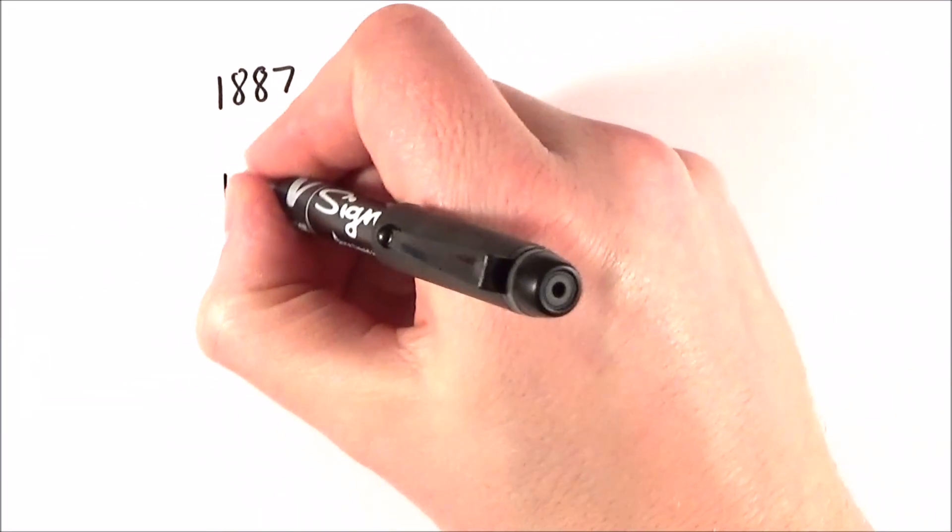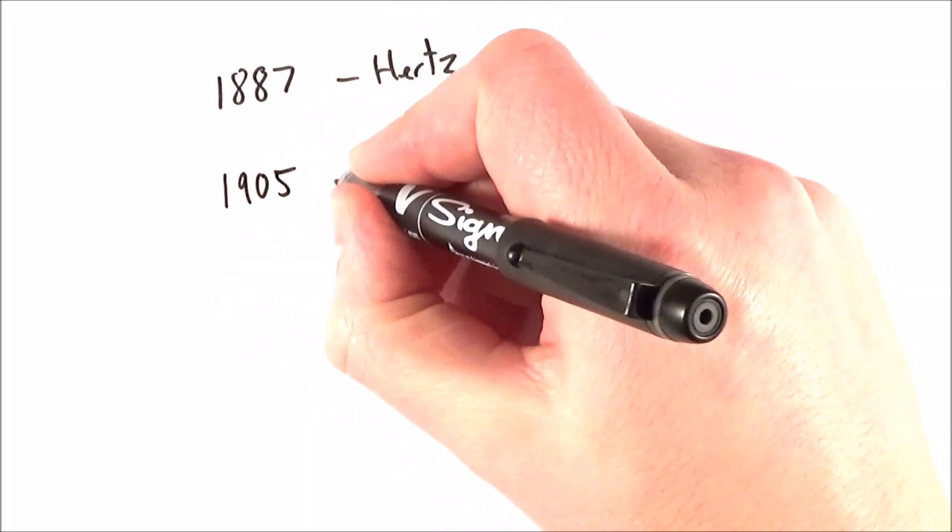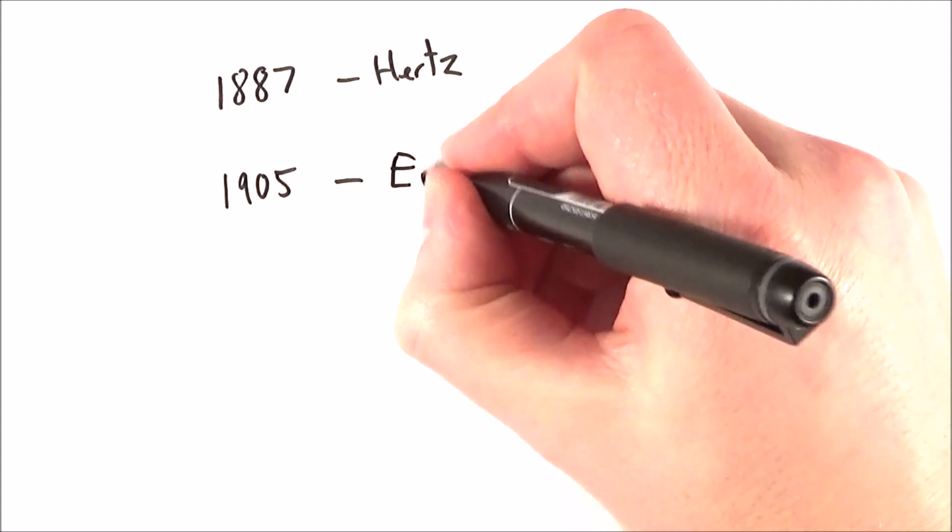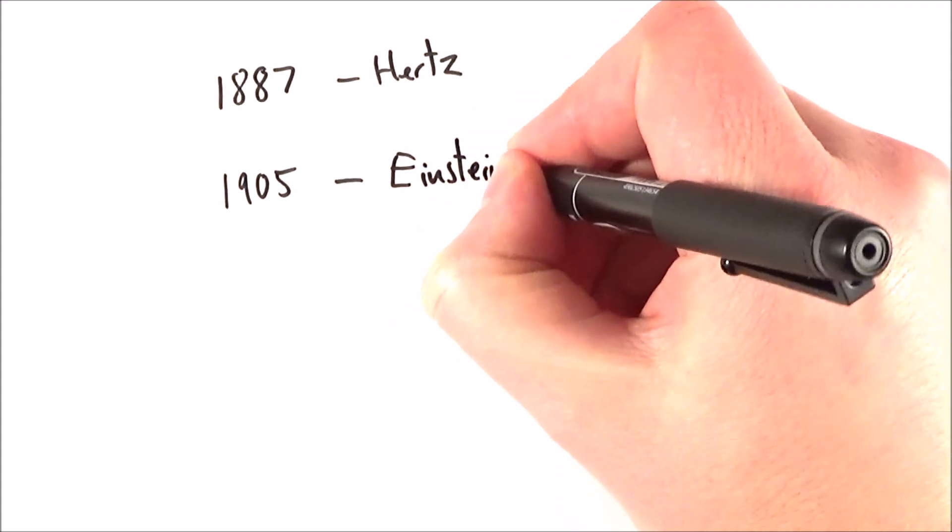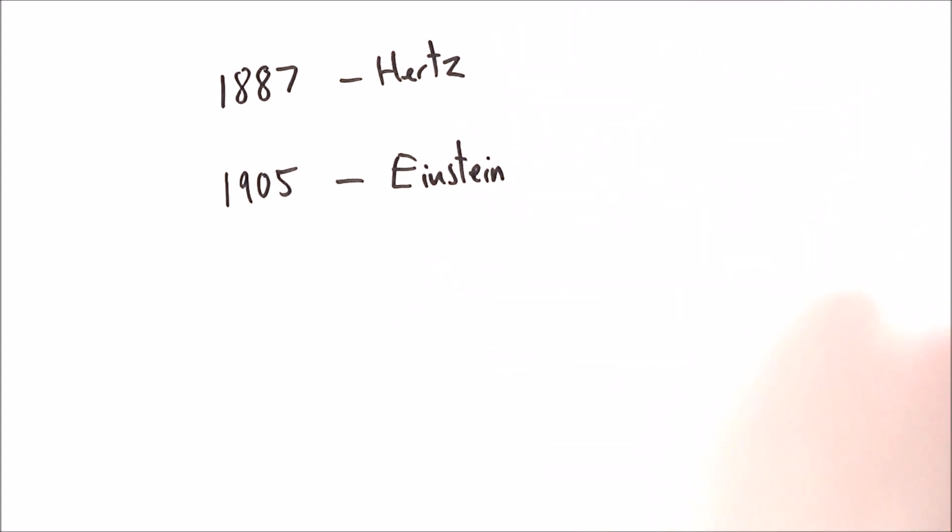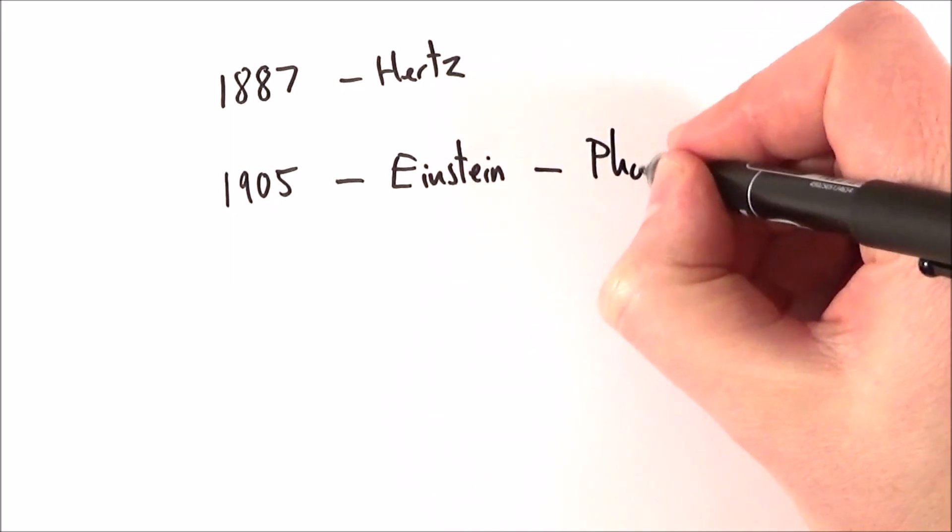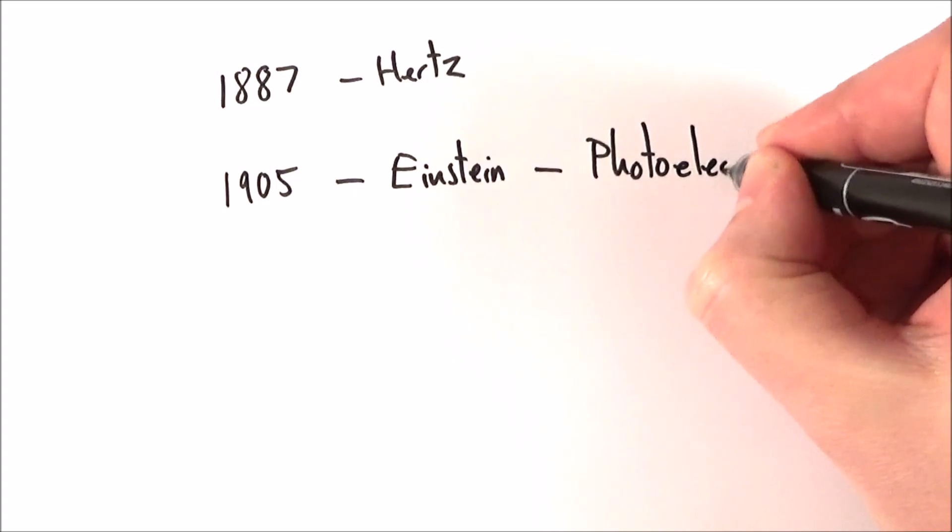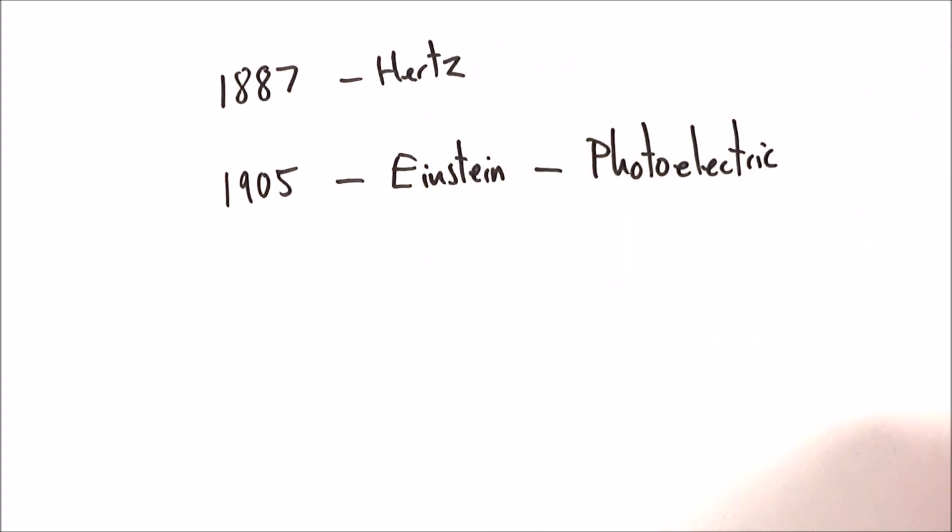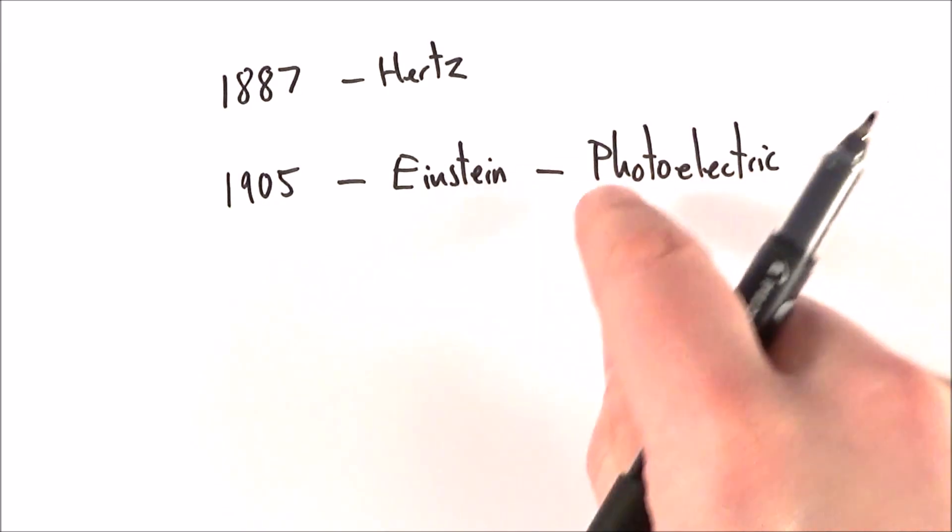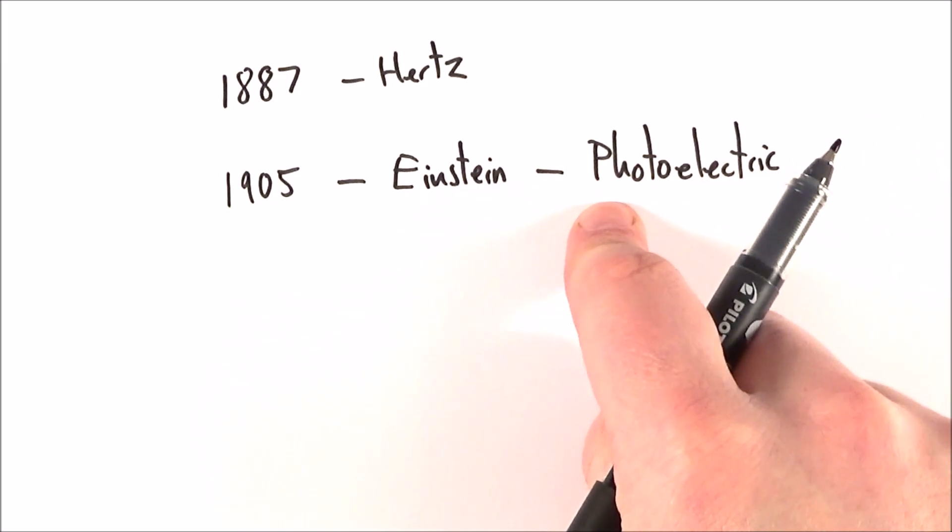It wasn't really until 1905 that there was a satisfactory explanation to what was happening, and this is where Einstein, who did a few things in later life, basically won the Nobel Prize for this. It was all due to his work on explaining the photoelectric effect and how we can basically cause electrons to be emitted by photons which are landing on them.